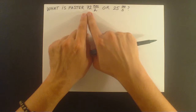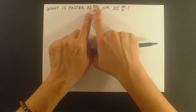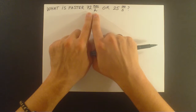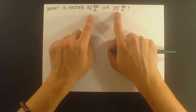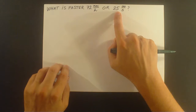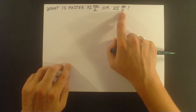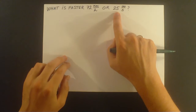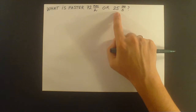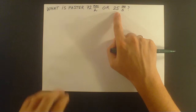We can convert 72 kilometers per hour into meters per second, or convert 25 meters per second into kilometers per hour. So we have two cases — two ways we could solve this problem.